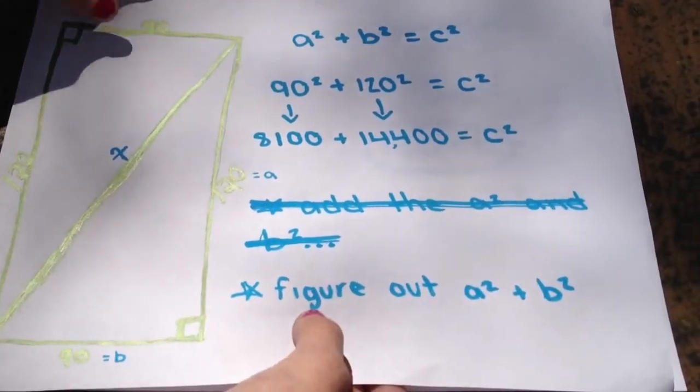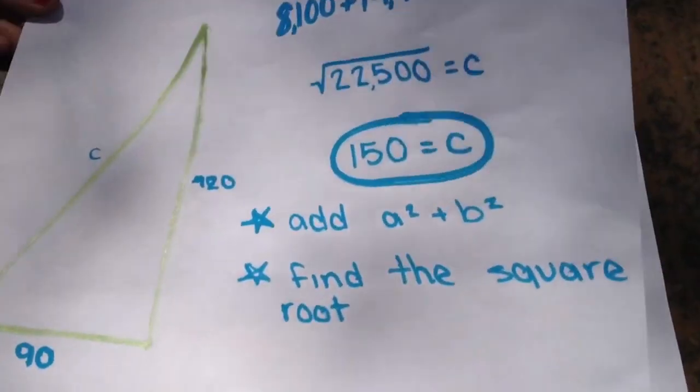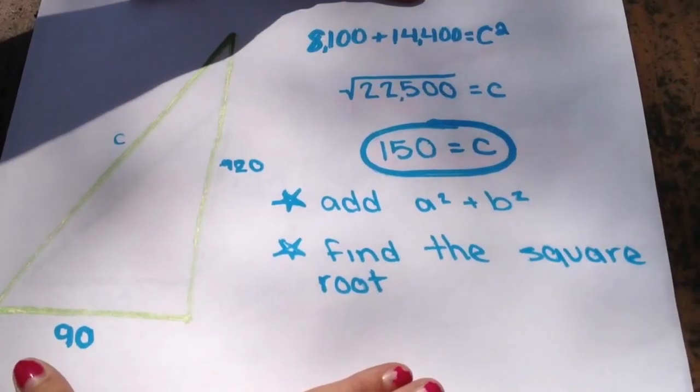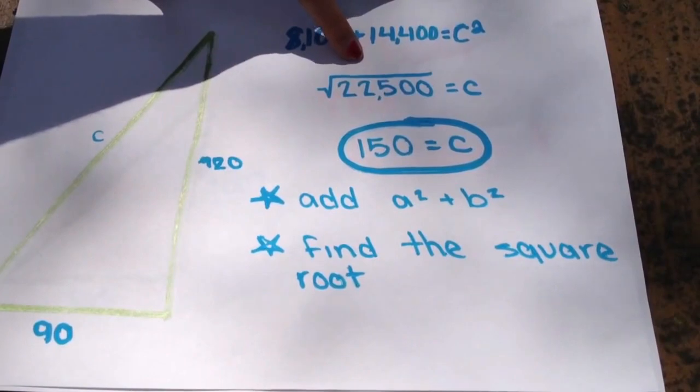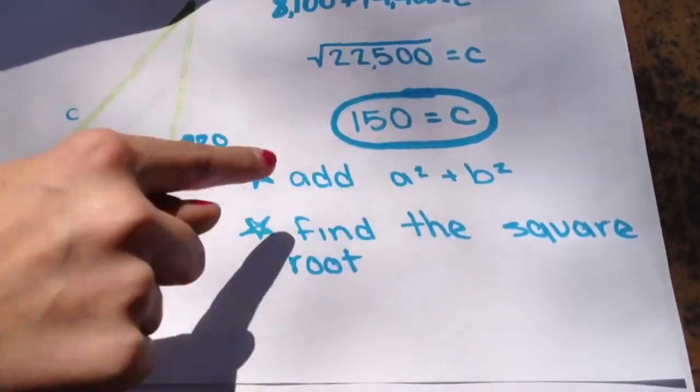Nice. So if we add those together, we get 22,500 equals c. And since 22,500 is a perfect square, which is 150, that will be the final answer.